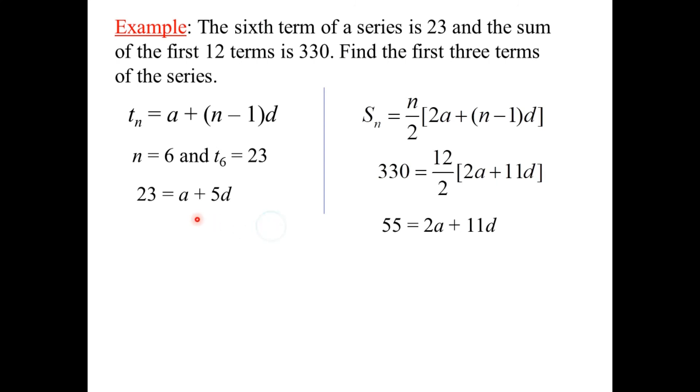Now we have in front of us two equations in two unknowns, a and d. Two equations in two unknowns is grade 10 math. We line them up. Number over number, equals over equals, a's over a's, and d's over d's. But we want to have the same number of a's. So we've only got 1a here, and we've got 2a here. So we'll multiply this one through by 2. Draw a line. And when these terms have got the same sign, we subtract. So subtract, and we get 9 equals d, or d equals 9.